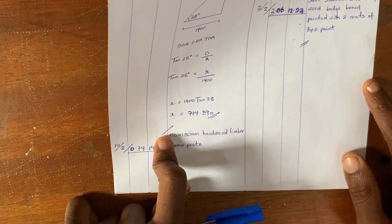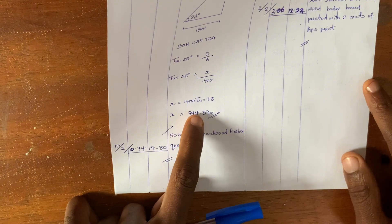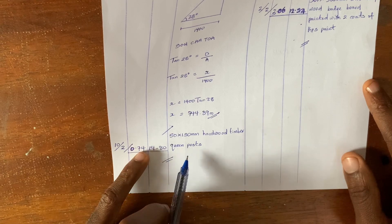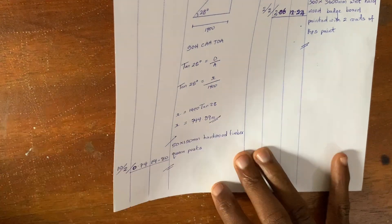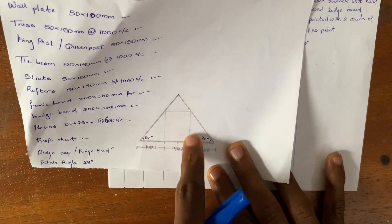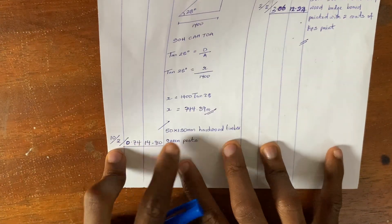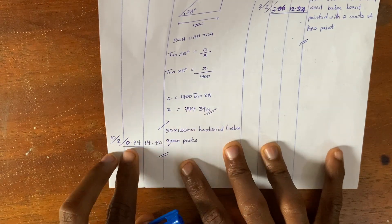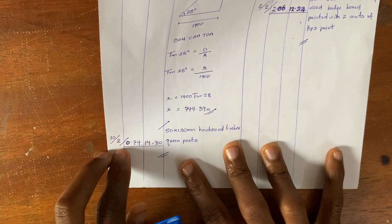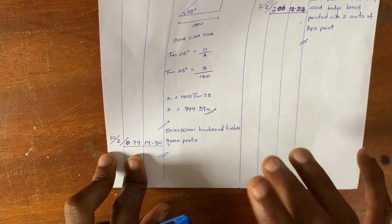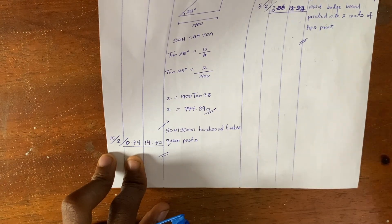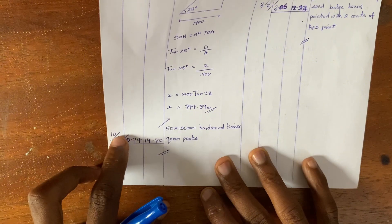x comes out to approximately 744.39mm. So our queen post is 744.39mm, described as 50 by 150mm hardwood timber queen post. We know the queen posts are two in number, so we measure 0.74m multiplied by 2 because there are two queen posts, then multiplied by the number of trusses. We have 10 trusses, so we multiply by 10.